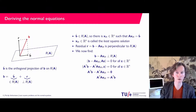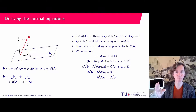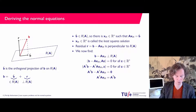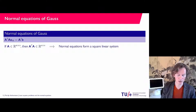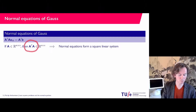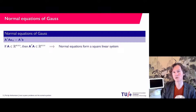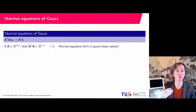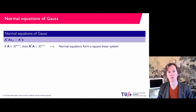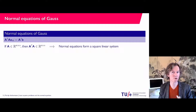They are called the normal equations of Gauss because Gauss found them first while working on observations of stars and planets — trying to fit curves through measured points in space to find orbits. If your matrix A is M times N, then A-transpose A is an N times N matrix, so it is a square system with the size equal to the number of unknowns. In the introductory example with 21 measurements and 3 unknowns, A-transpose A would be a 3-by-3 linear system.